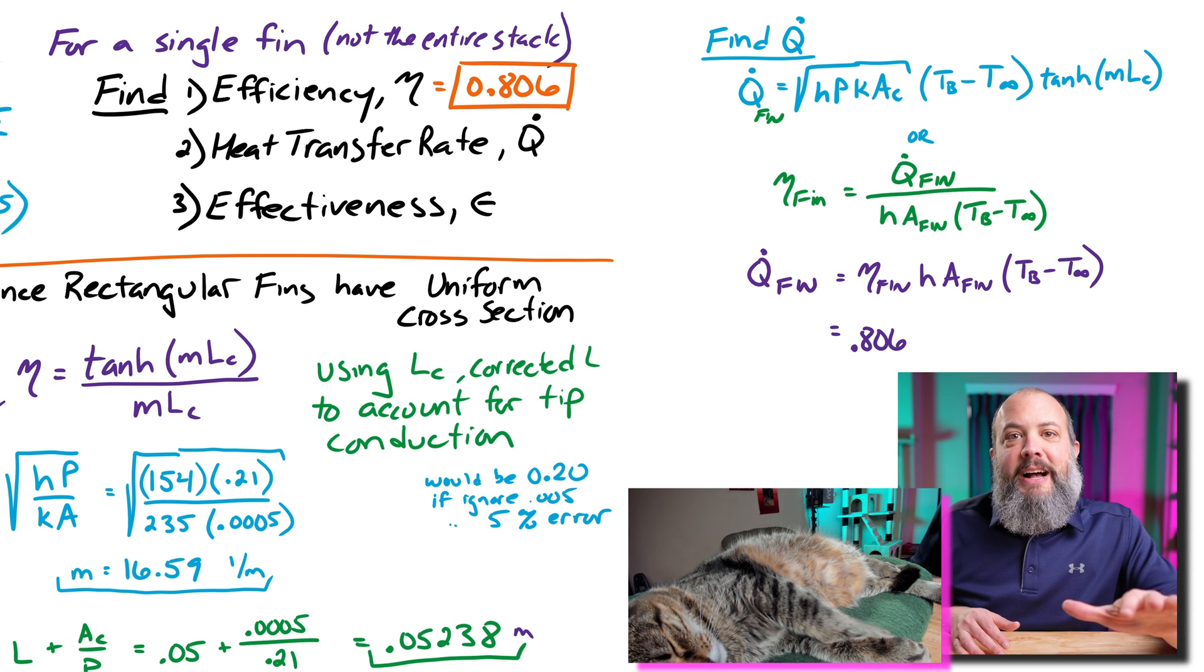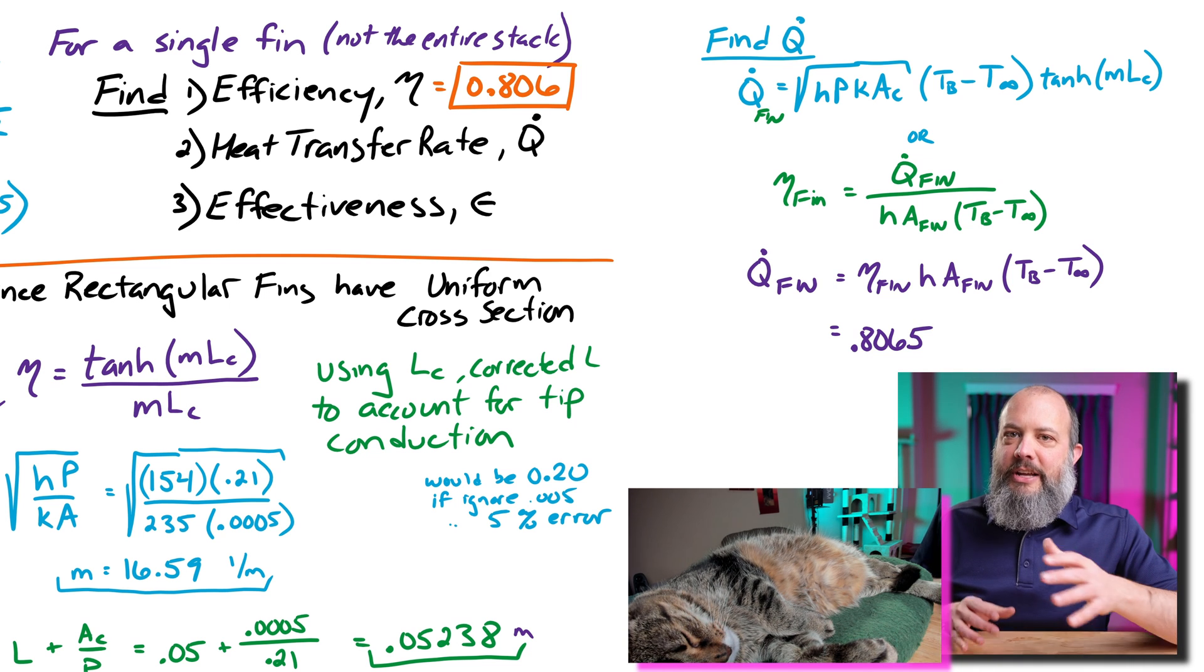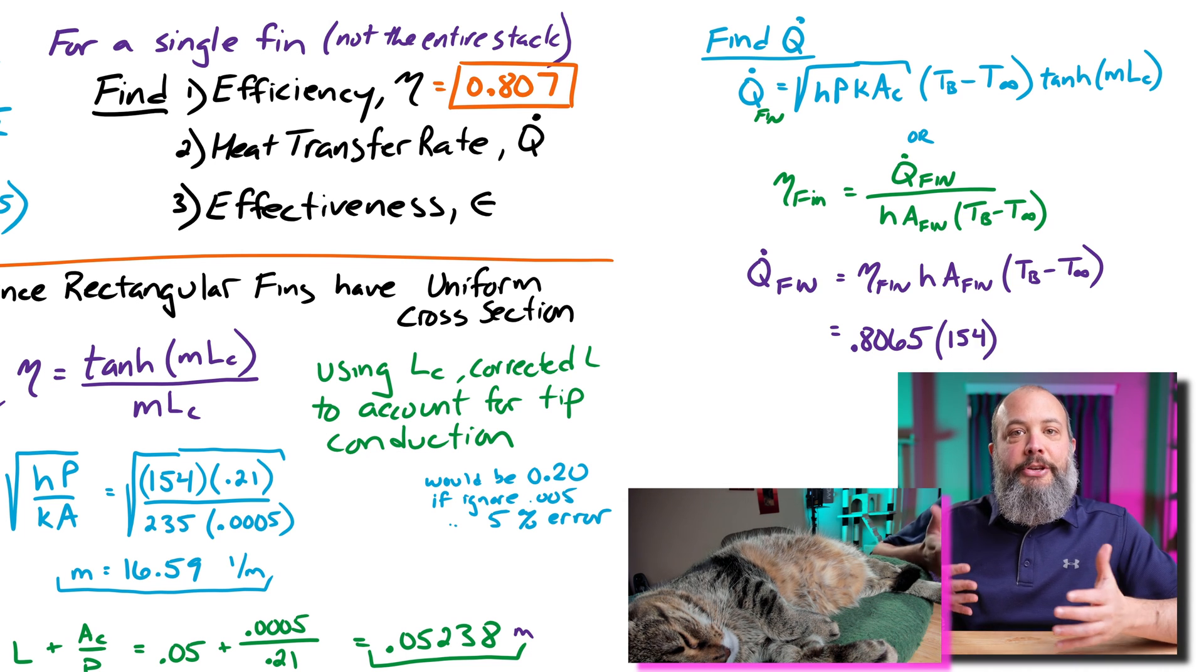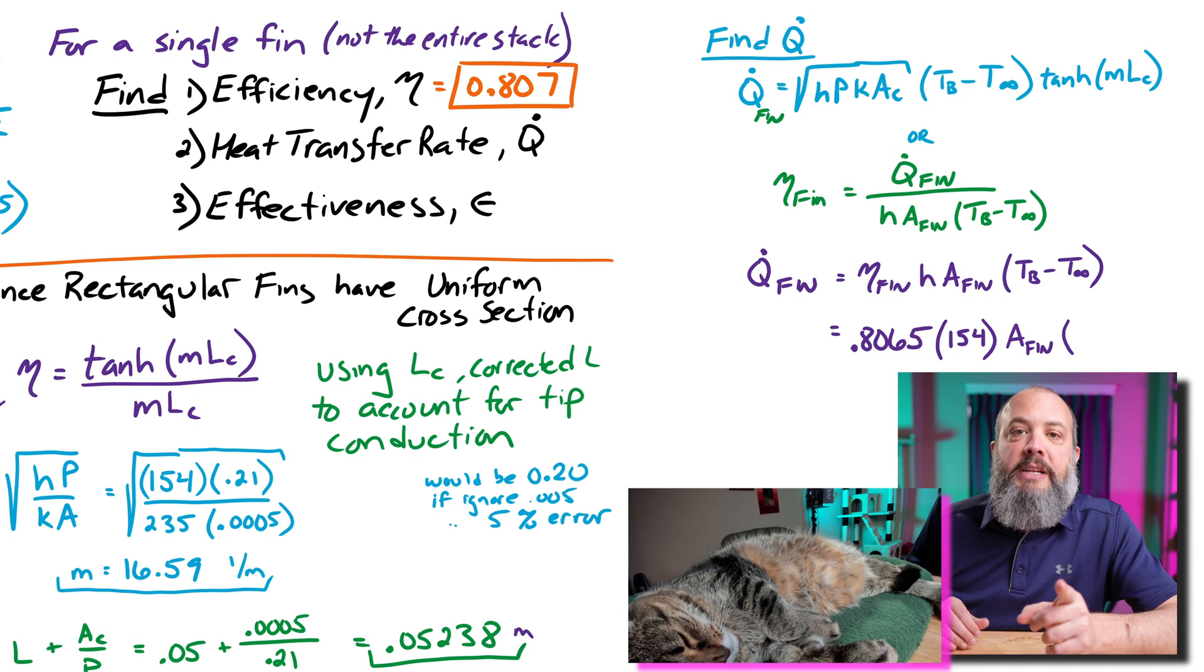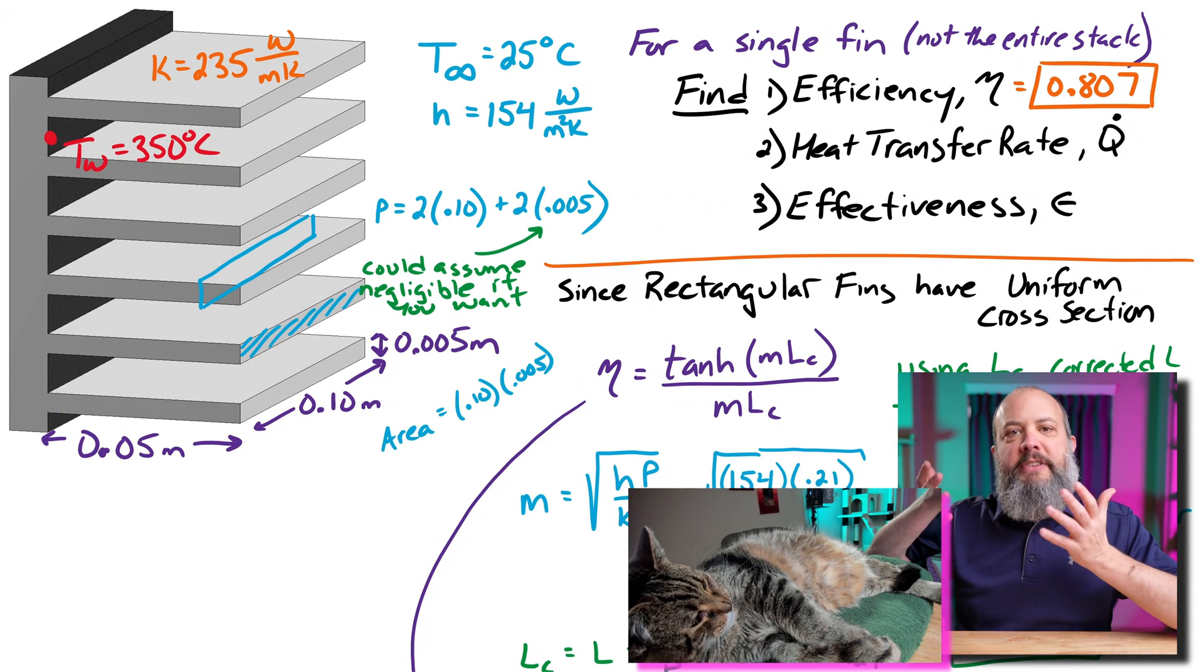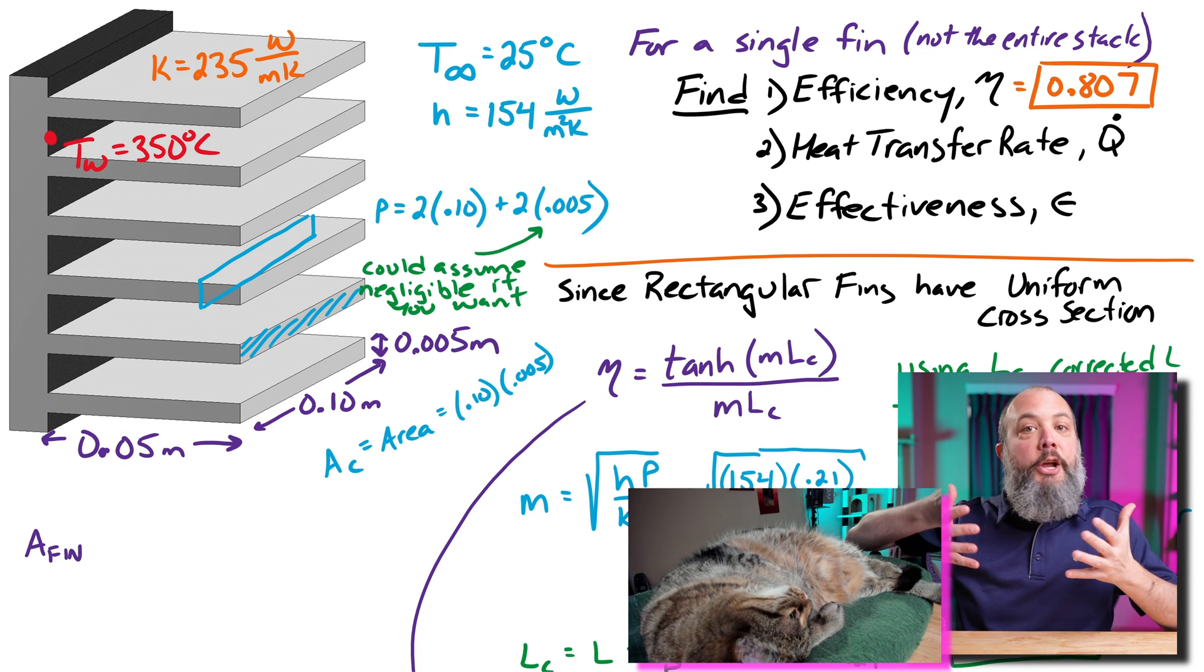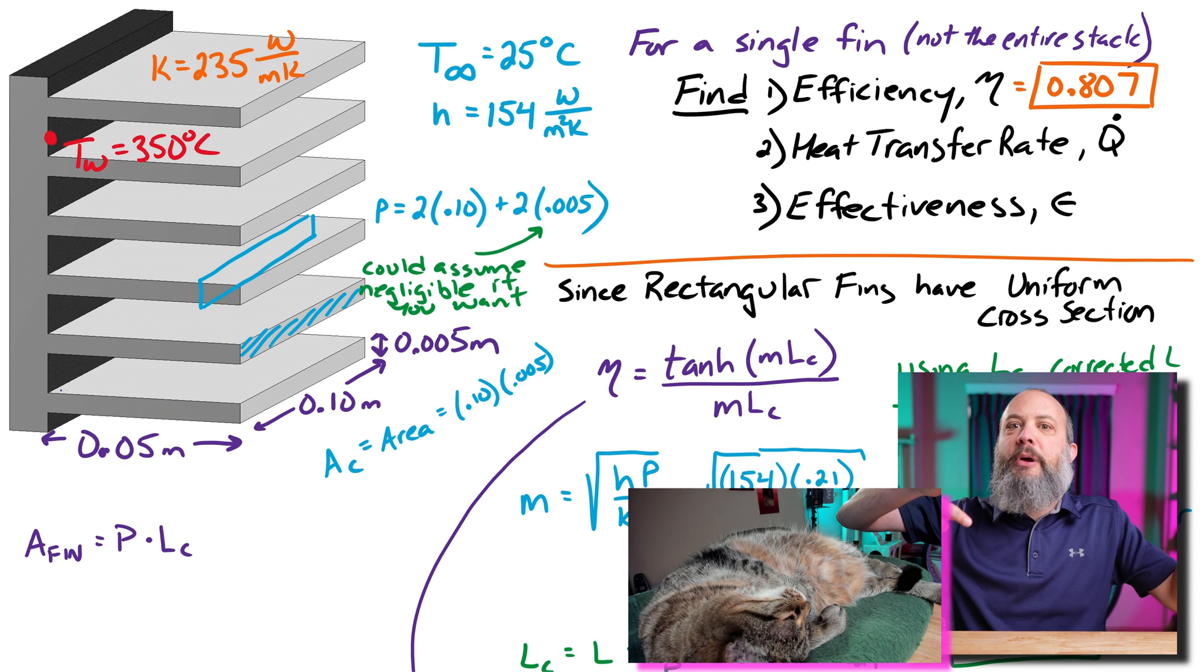Now this area of the fin is going to be the surface area, not the cross-sectional area. When using the regular convection equation, HA delta T, you want the total surface area that convection is happening over. So this is a new area that I'll have to calculate. And I can get the surface area, and think of like the surface area of a cylinder is the perimeter of your circle times the length of the cylinder. That's basically what I'm doing here, but with a rectangle. So the perimeter of my rectangle times the length of the rectangular fin.